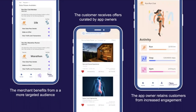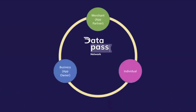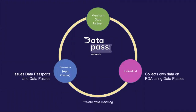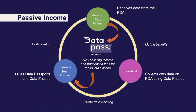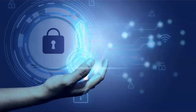The app owner can use data passes to retain customers and increase engagement. This win-win-win solution is called the data pass network, where app owners enable individuals to collect their own data and share it with merchants who partner with app owners. The data pass network is coordinated by DataSwift as the network operator. DataSwift gets paid by the merchants and gives 50% of the income back to the app owner that created the data pass — that's passive income for the app owner as their customer base grows.